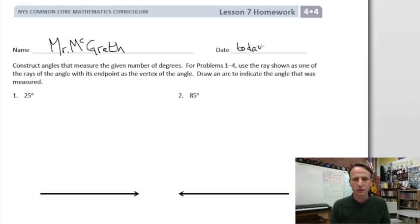Our instructions: construct angles that measure the given number of degrees. For problems one through four, use the rays shown as one of the rays of the angle with its endpoint as the vertex of the angle, and draw an arc to indicate the angle that was measured.